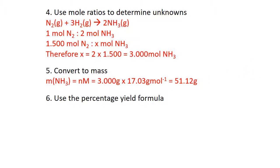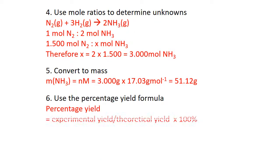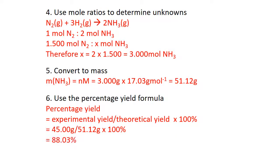Applying the percentage yield formula: percentage yield equals experimental yield divided by theoretical yield times 100. So it's 45 divided by 51.12 times 100, giving 88.03% — not a bad yield for that kind of reaction.